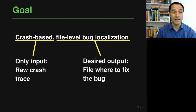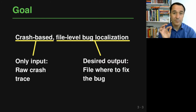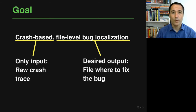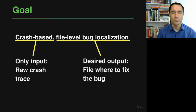Of course, ideally we would like to get even more fine-grained information — for example, pinpointing the specific statement that you need to change to fix the bug. But given the kind of code base we are interested in here, this is very challenging. So we are focusing on file-level bug localization.